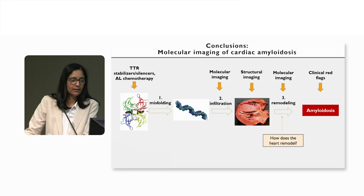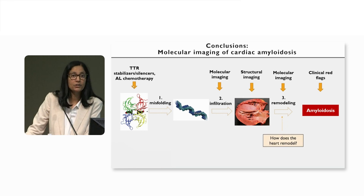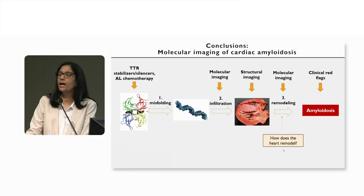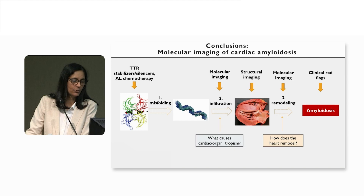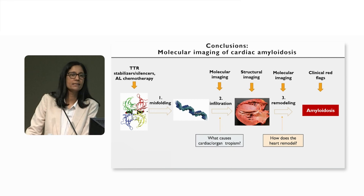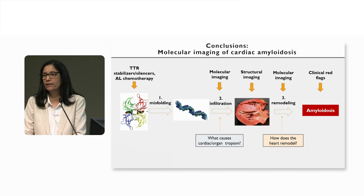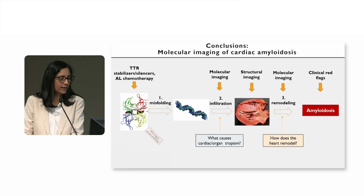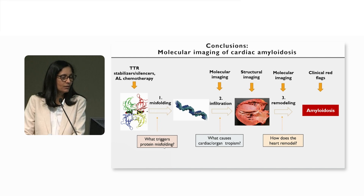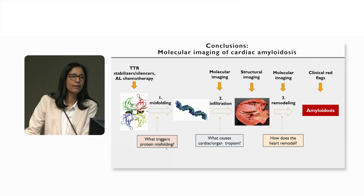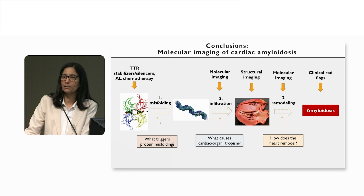Right now, with all the radiotracers that we have access to, we are able to ask questions such as: how does the heart remodel with amyloidosis? What causes cardiac or organ tropism? Why is it that some people have the heart affected while others have the kidney or lungs affected? And if we can understand what triggers protein misfolding in some of these patients, we can probably consider primordial prevention.